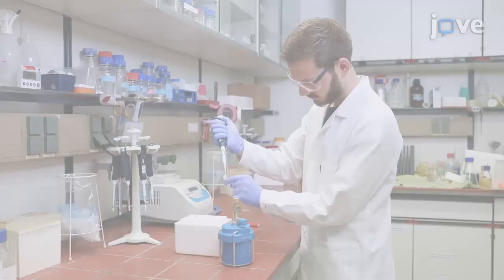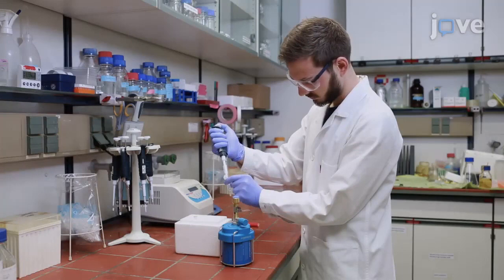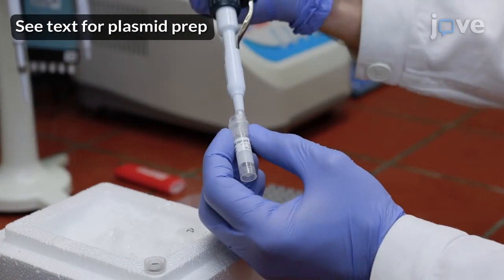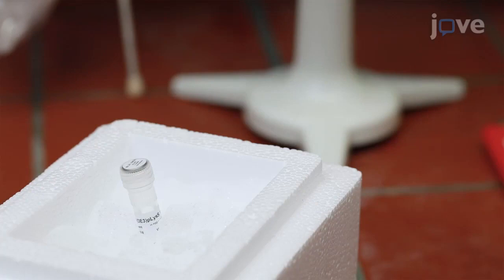First, insert 5-10 nanograms of plasmid into 100 microliters of competent BL21-DE3-P-Lys E. coli bacteria on ice. Slightly tap the tube to mix the contents. Keep the bacteria on ice for 30 minutes, gently tapping the tube every few minutes.